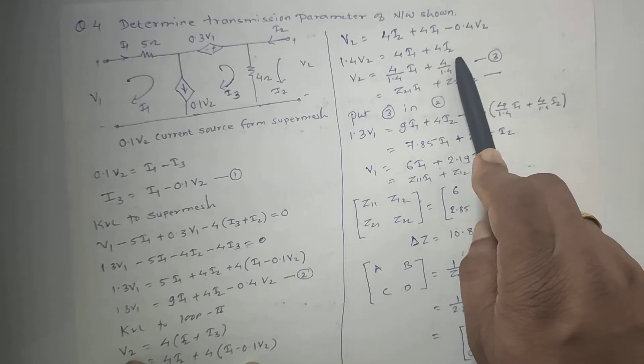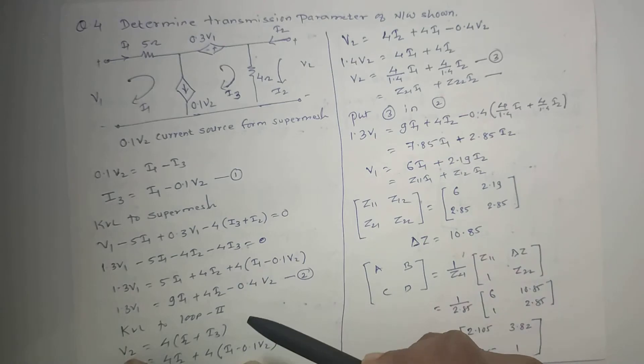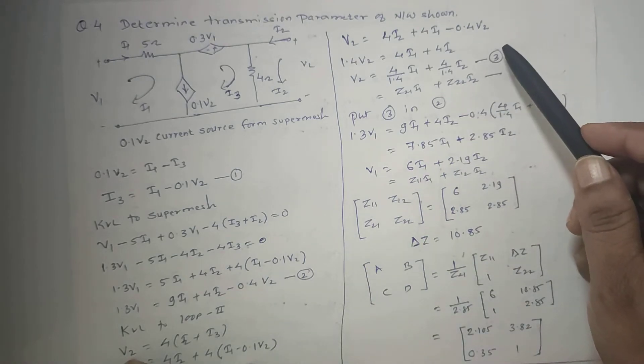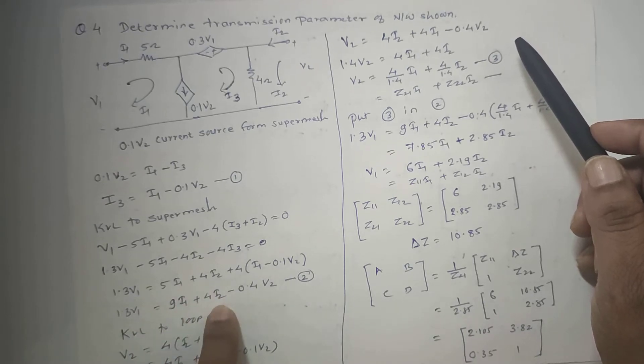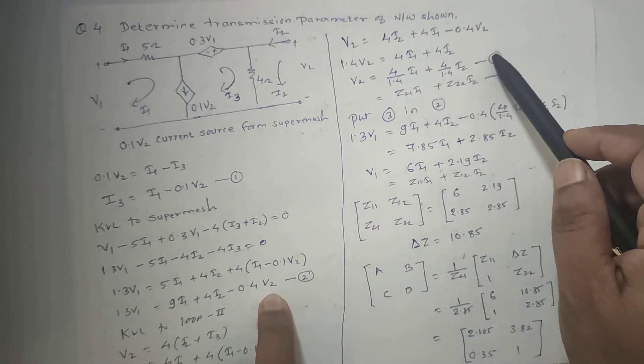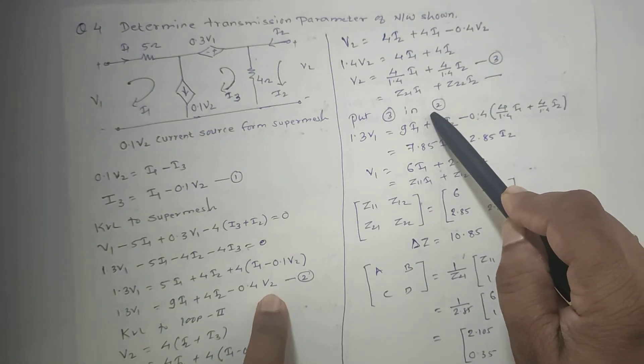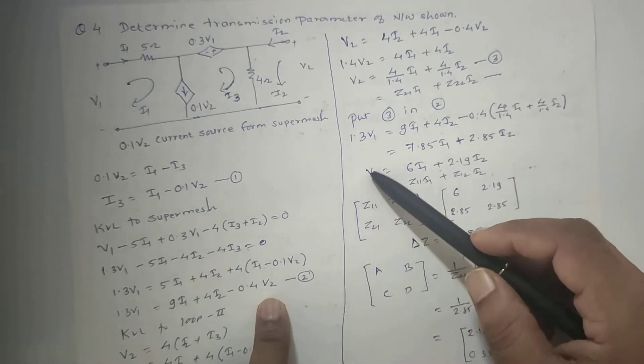This will be used for the Z parameter of Z matrix: Z21·I1 plus Z22·I2. Now in equation 2 we require V1 in terms of I1, I2. We don't need V2, so therefore this V2 will be removed by putting equation 3 in equation 2.